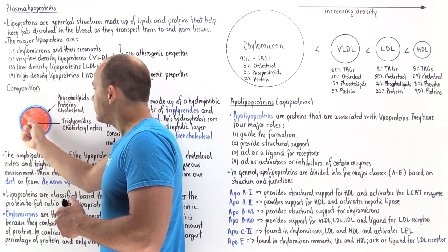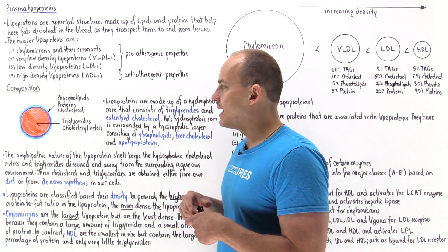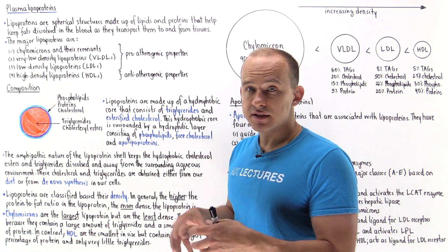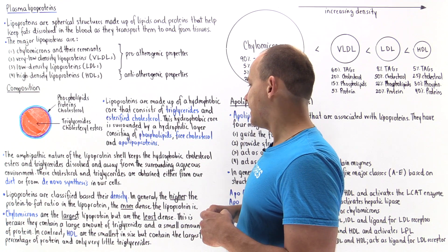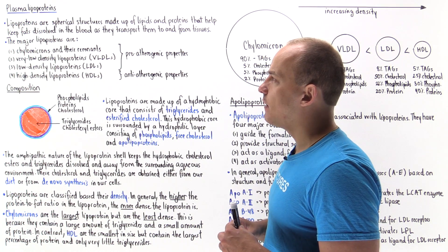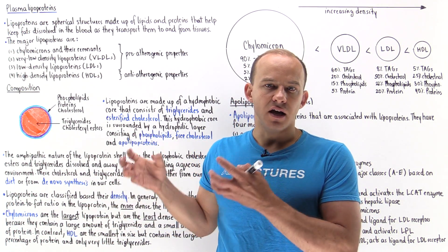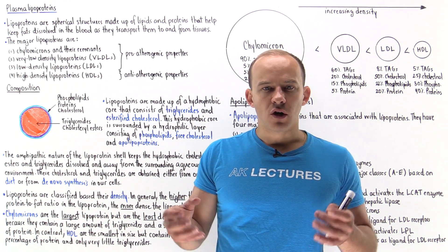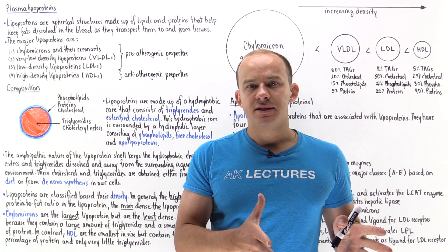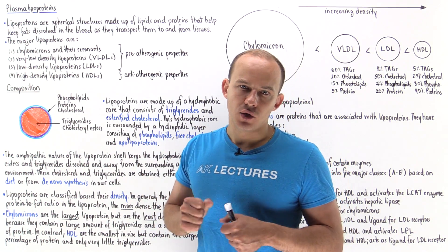Where do we get the triglycerides and cholesterol esters? They come either from our diet, or from de novo synthesis within our cells — our cells can synthesize these molecules from scratch. Generally speaking, lipoproteins are divided based on their density. What determines the density of a lipoprotein? The greater the protein content and the lower the triglyceride content, the more dense that molecule actually is.